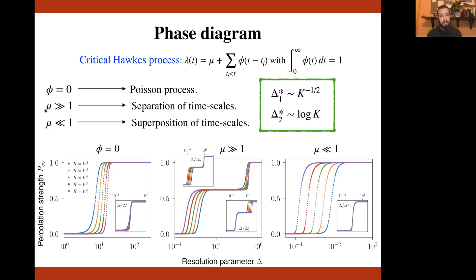If we consider mu much larger than one, one being the typical time scale of decay of the function phi, then there is a neat separation of time scales. The Poisson process at rate mu produces events which have an average distance one over mu, so they are typically very far apart. And so the individual bursts that are produced by the kernel by each of these spontaneous events are very well separated in time.